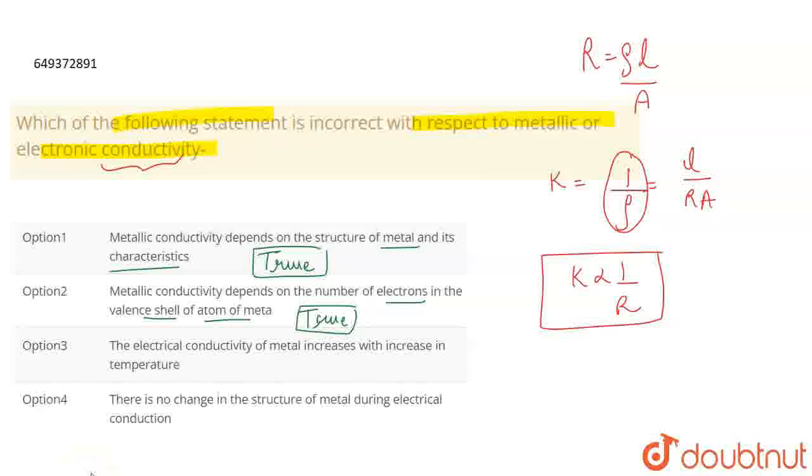The next one is the electrical conductivity of metal increases with the increase in temperature. When the temperature increases, the resistance increases. When the resistance increases, the conductivity decreases. That's why this statement is true.